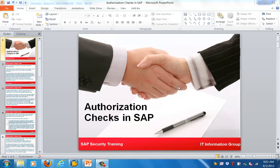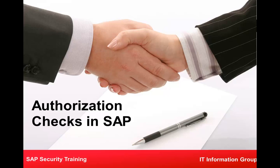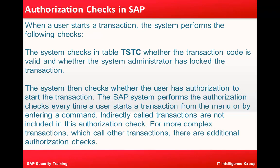Good morning everyone. Let's get started with the next topic for this training, which is authorization checks in SAP. Whenever a user starts any transaction, the system performs the following checks. First, the system checks in the table TSTC whether the transaction code is valid or not, and whether the administrator has locked the transaction or not.